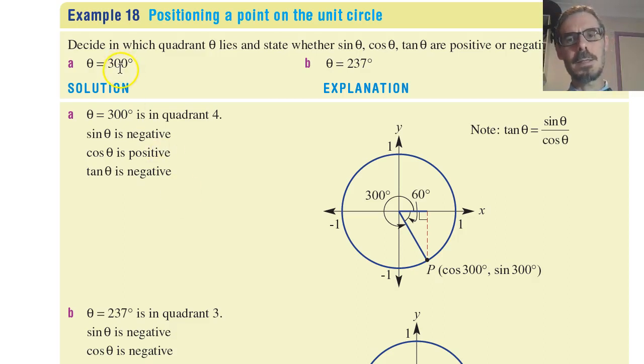We start with 300 degrees. So first we go, well, 300 degrees around must be in the fourth quadrant. Zero, 90, 180, 270. So 300 is here.